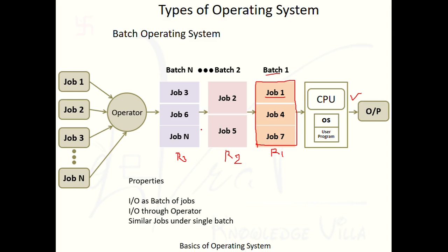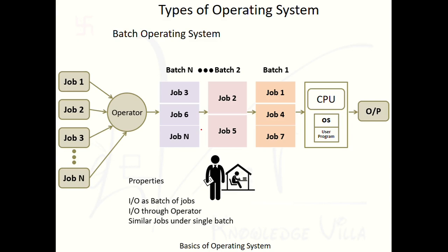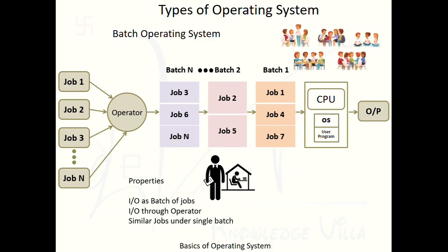Let's discuss an example we mentioned while discussing the earlier system. Suppose a professor is teaching one student personally — like personal tuition. In a single day the professor can teach maybe five to seven students. But suppose we make a batch of a few students — like four students who want to learn a single subject together.